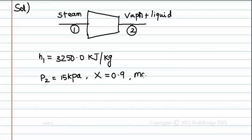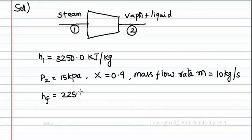Mass flow rate m = 10 kg per second. Enthalpy of the saturated liquid HF = 225.94 kJ per kg, and enthalpy of saturated vapour HG = 2598.3 kJ per kg.